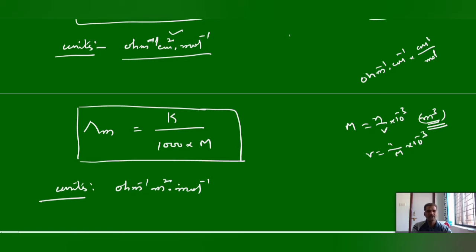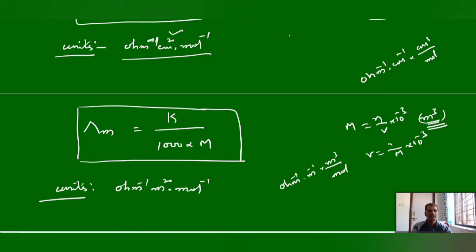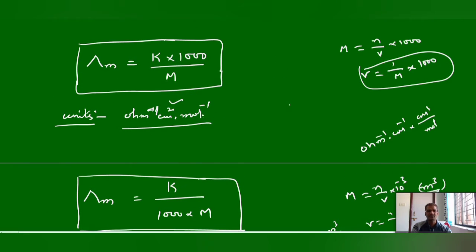In SI units, the overall unit is ohm inverse meter squared mol inverse. Practically: if the question gives units as ohm inverse meter squared mol inverse, use the formula K by 1000 into molarity. If the units are ohm inverse centimeter squared mol inverse, use K into 1000 by molarity. The first formula (K into 1000 by molarity) is the most important for numerical calculations.